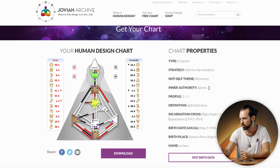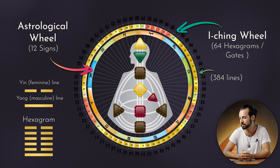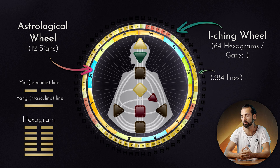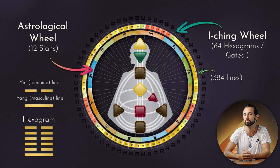Let's try to understand where this is coming from. Here we can see the human design body graph with its nine centers, and around it the astrological wheel. You can see all the symbols — Aries, Taurus, Gemini, Cancer, etc. Overlaid on top of that we can see numbers. These are the 64 gates of the I Ching. So basically human design is a combination of the I Ching and astrology.